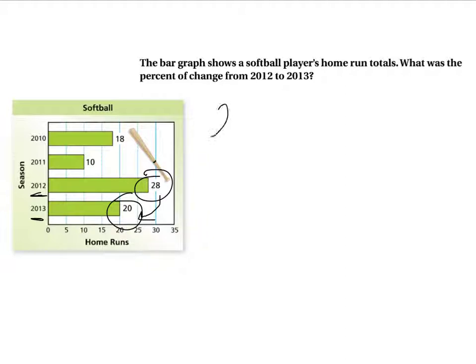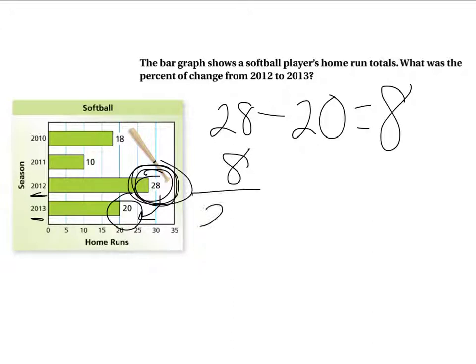So I'm going to subtract the 28 minus the 20 and I'm going to get obviously 8. I then divide by my original. My original is 28. That's what I started with, so I become 8 divided by 28.